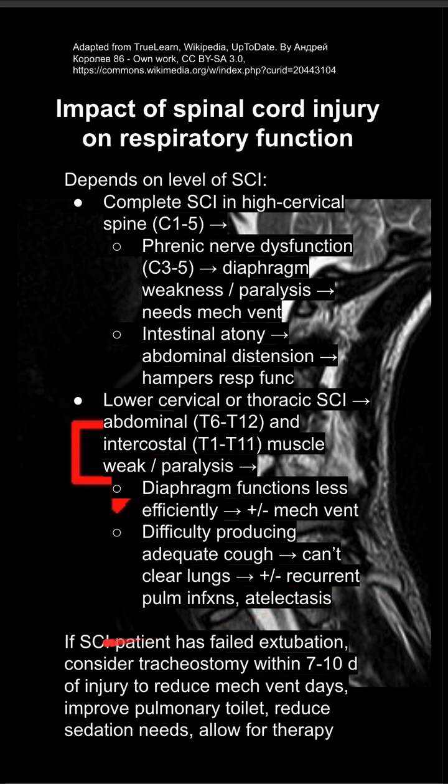Notably, if a patient with a spinal cord injury has failed extubation, you do want to consider tracheostomy within 7 to 10 days of the injury. This will help them reduce their mechanical ventilation, improve their pulmonary toilet, reduce their sedation, and allow for therapy.